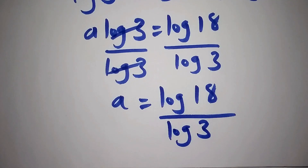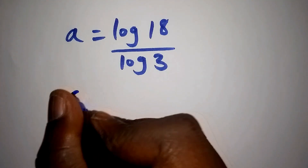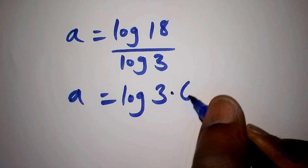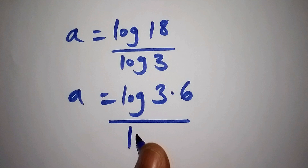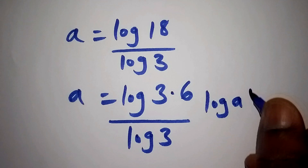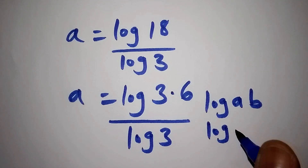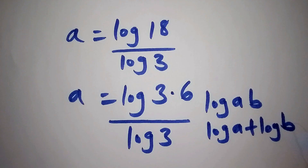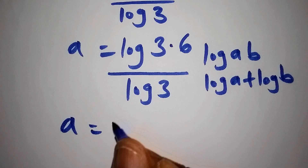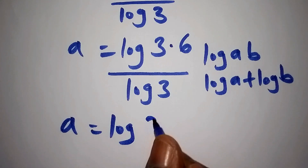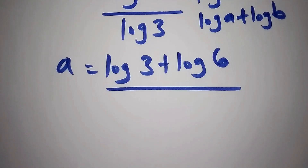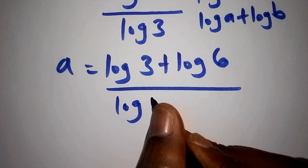Our next step: log of 18 can also be written as log of 3 multiplied by 6, all over log of 3. Remember that log of a times b can also be written as log of a plus log of b. So our a equals log of 3 plus log of 6, all over log of 3.